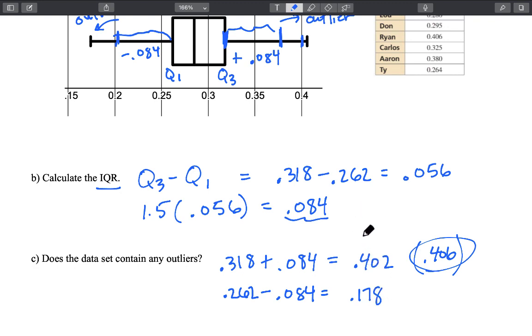All right so likewise on the lower end we know our minimum value was 0.174 and that too is going to be an outlier.